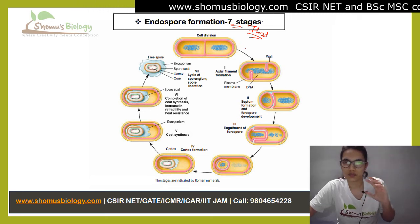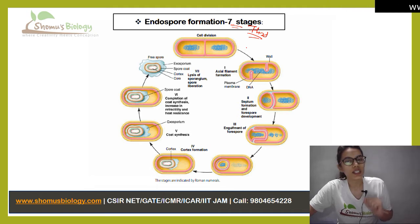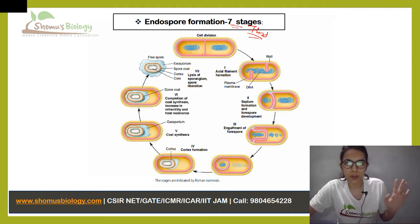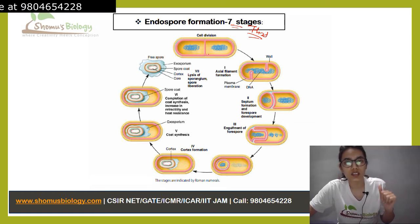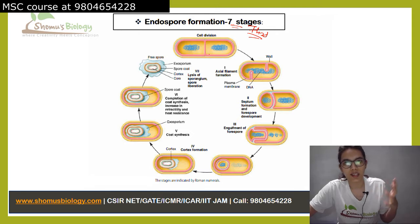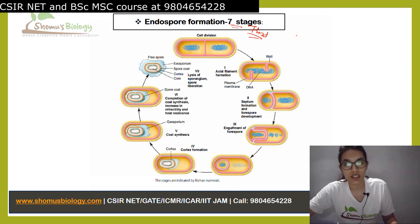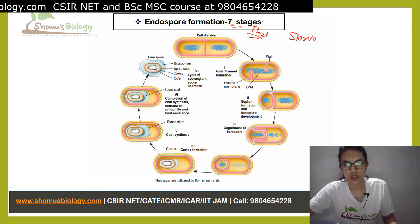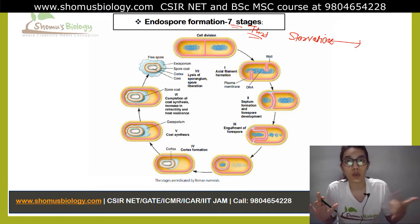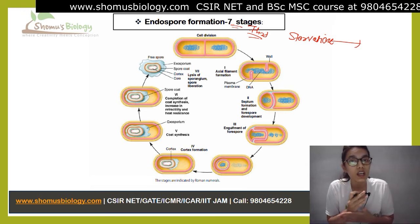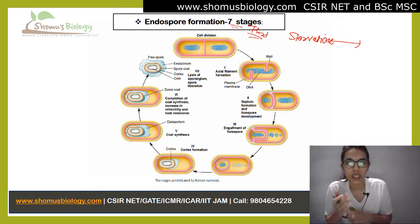Endospore formation is both an easy and complicated cycle. Let's say the bacteria are staying happy in their environment and dividing in a normal state. But suddenly, environmental conditions start getting harsh and there is no nutrition available around them — that is starvation. Now, bacteria can sense their surroundings, and this bacterium is going to sense that it is starvation and that it has to do something for itself.